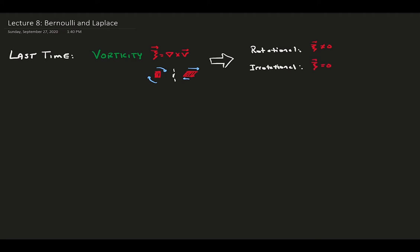If you assume the flow is irrotational, you can develop the velocity potential, a useful function for analyzing irrotational fluids.